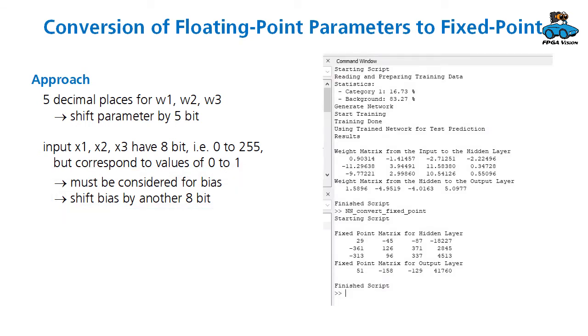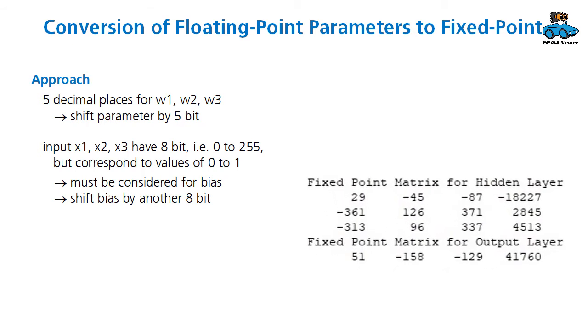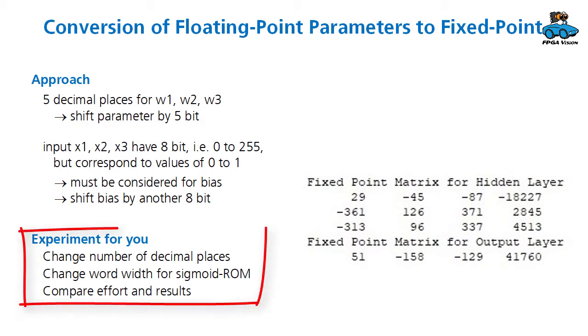This conversion is done by an octave script. We have the script from the previous lecture that calculates the floating point parameters. Then we have a script, convert_fixed_point, that calculates the fixed point parameters. Here are the values. The 5 decimal places are a design choice. You can use other numbers of decimal places. You can also change the word width of the signal and compare effort and results.